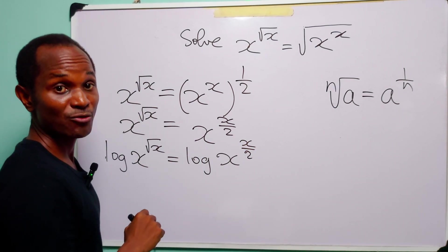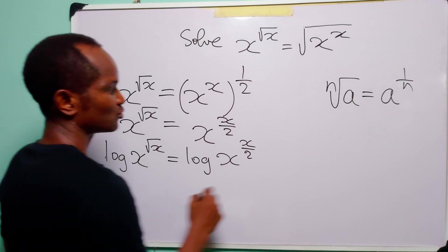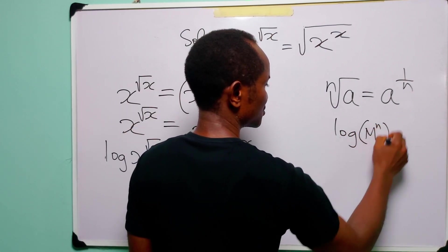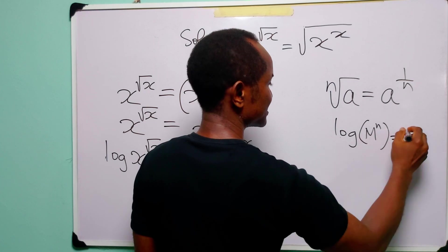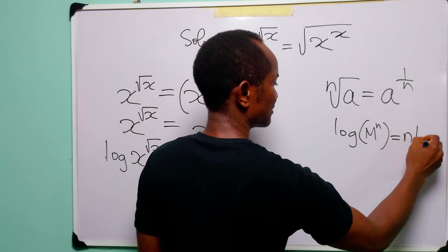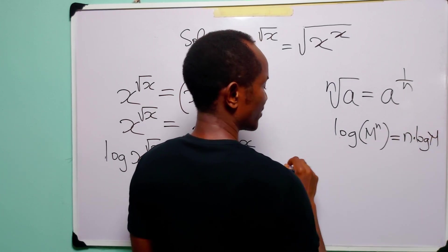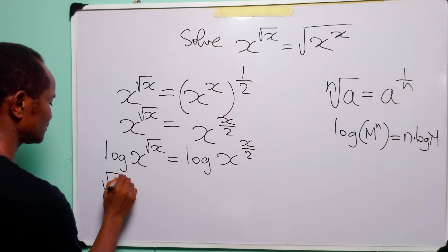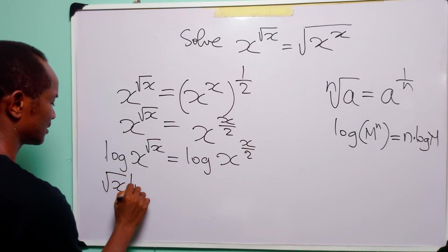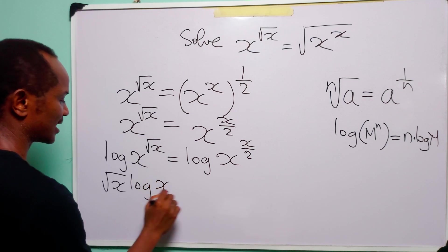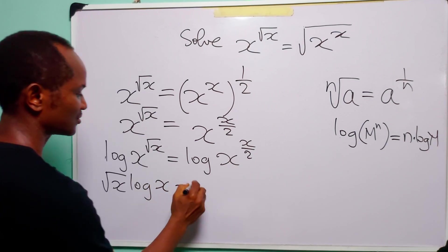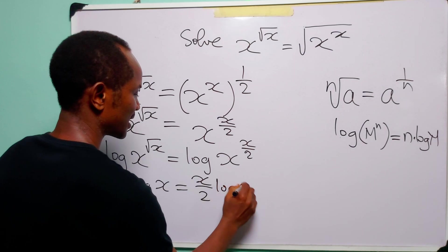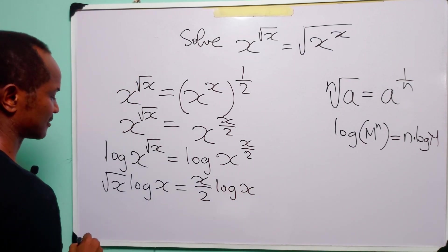Let us recall the power rule of logarithms. That rule says that when we have log of m to the power n, this is the same as n multiplied by log of m. So here we have square root of x multiplied by log x is equal to x over 2 multiplied by log x.